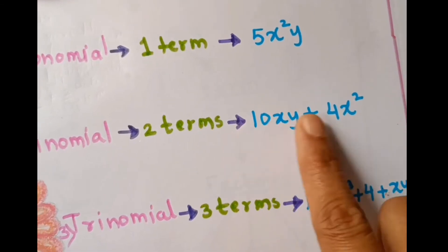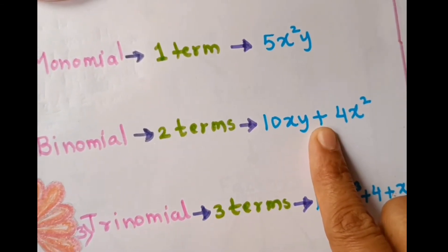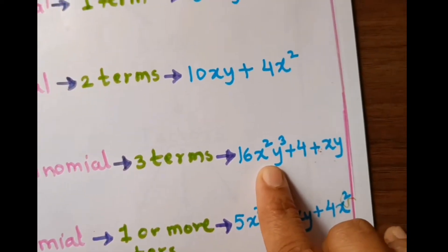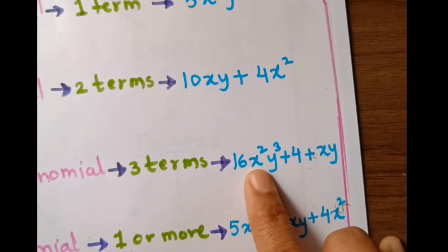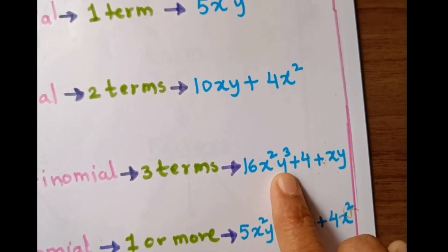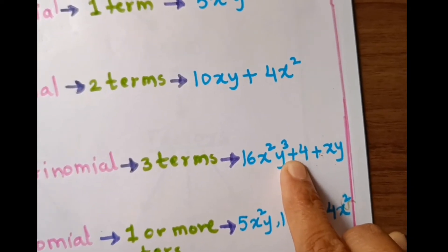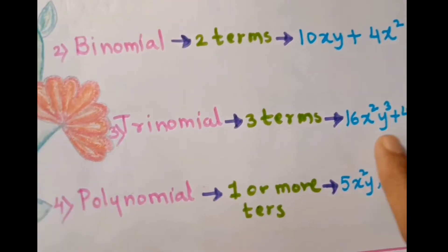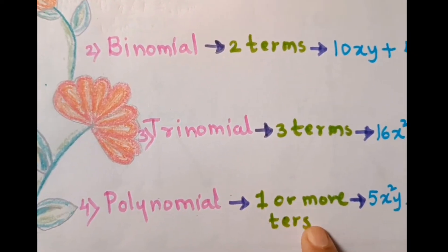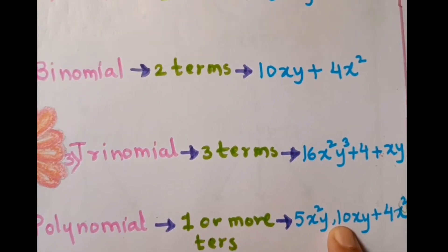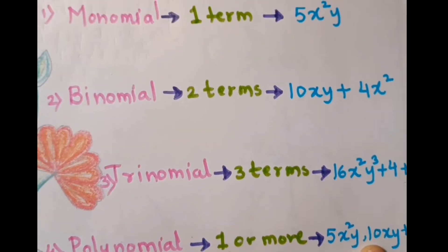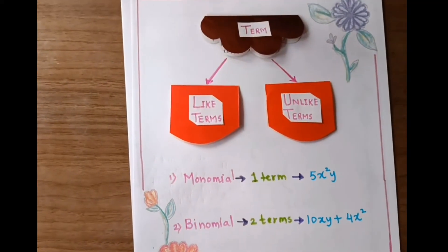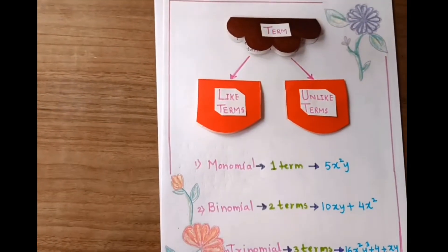Here are the terms. Three terms. One term is 16x squared y cubed plus 4, and xy is one term — there are three terms. Then polynomial: one or more terms. Here is the example.